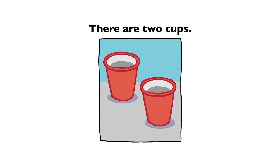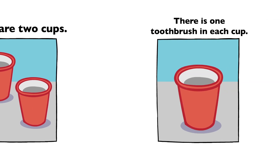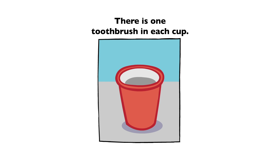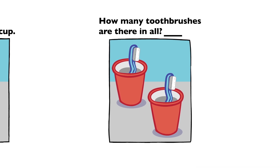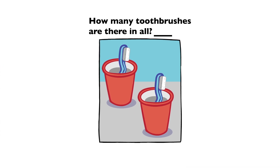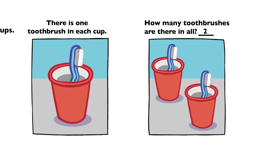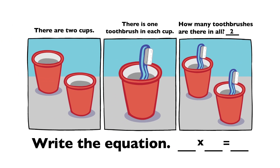There are two cups. There is one toothbrush in each cup. How many toothbrushes are there in all? 2. 2 times 1 equals 2.